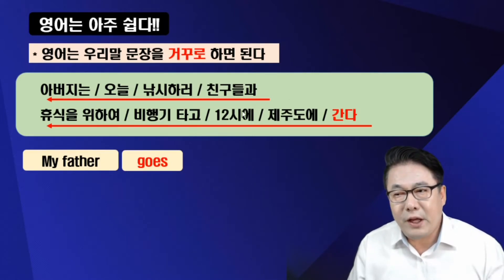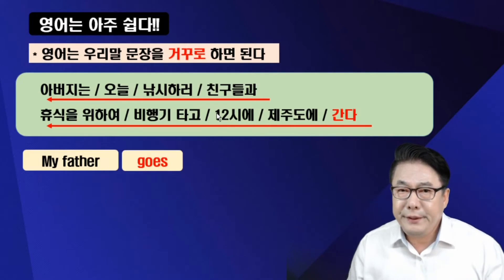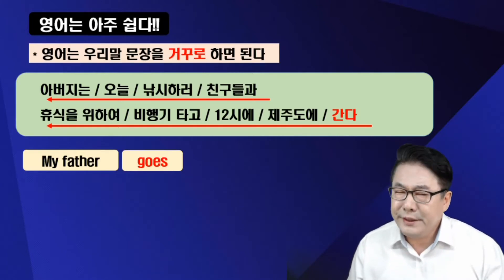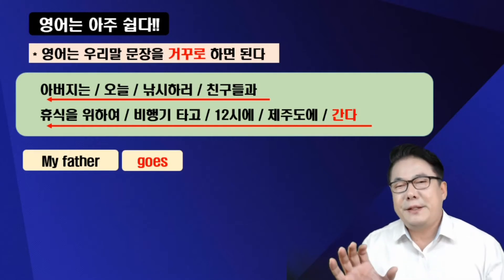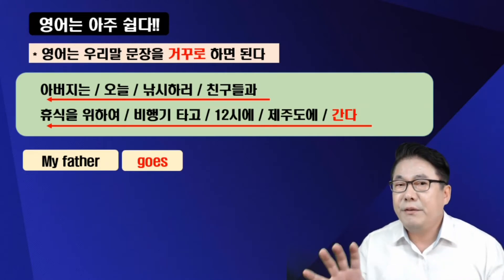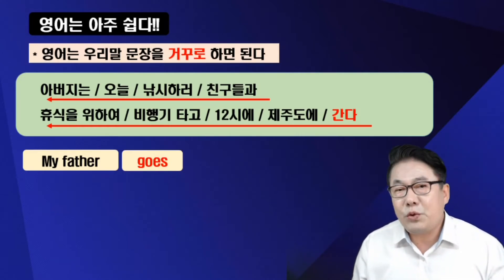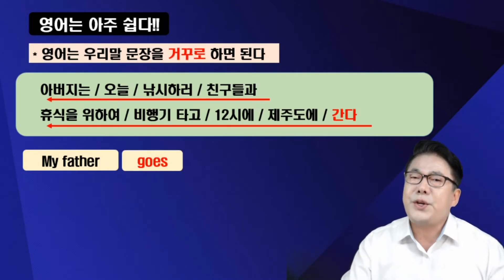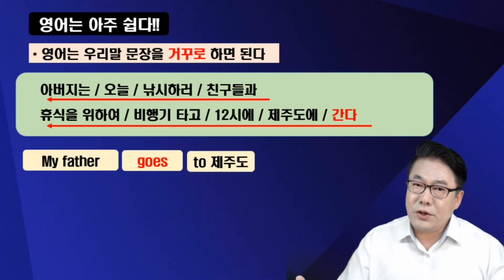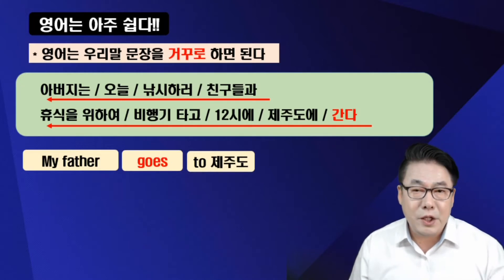다시 한번 말씀드릴게요. 주어 my father 한 다음에 끝에서부터 올라오면서 말하면 된다고 했어요. 간다 했어요, go. 그 다음에 뭐가 와야 되냐면, '에 제주도'가 되는 거예요. 두 글자입니다. 에가 먼저잖아요. 이게 방향성이니까 to Jeju가 되는 거죠. 12시에는 시간 앞에 at을 붙여서 at 12 하면 되겠죠.